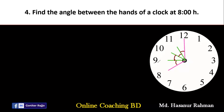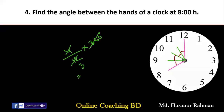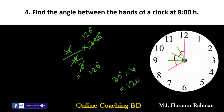We can also write it as 4 out of 12 hours multiplied by 360 degrees. That is 4/12 × 360 = 120 degrees. So the angle between the hands of a clock at 8 o'clock is 120 degrees. Alternatively, hands create 30 degrees per hour, so 30 multiplied by 4 gives 120 degrees.